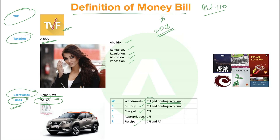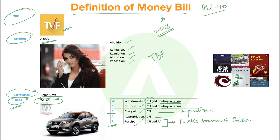Any funds withdrawn from the Consolidated Fund of India and the Contingency Fund of India are a part of the money bill definition. Any fund under the custody of the CFI and the Contingency Fund is also a part of the money bill. Any expenditure charged on the CFI is also covered — the definition of an expenditure charge is comprehensive. Appropriation made on the CFI is also a part of the money bill, and any receipt out of the Consolidated Fund of India and the Public Accounts of India is also part of the money bill's definition.